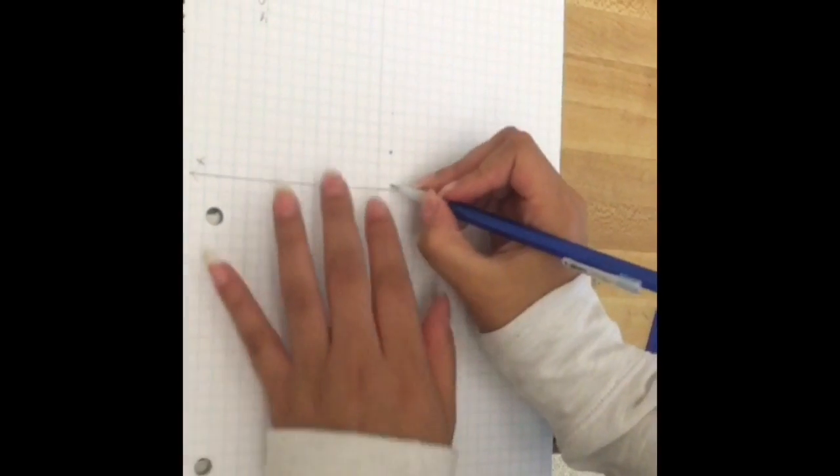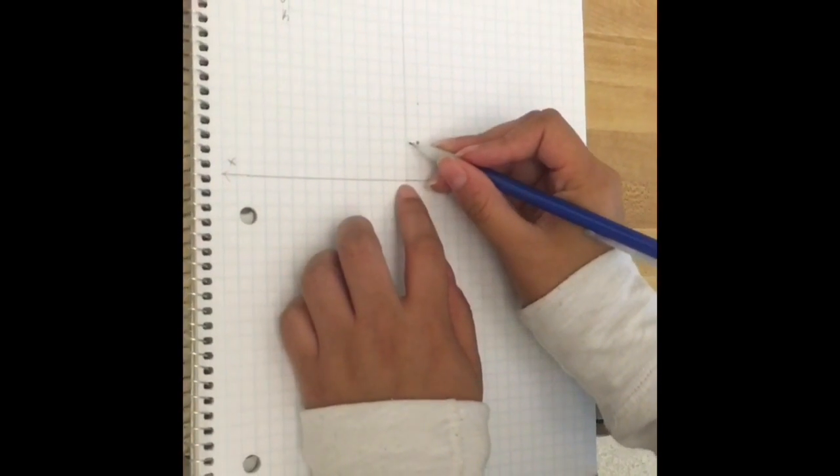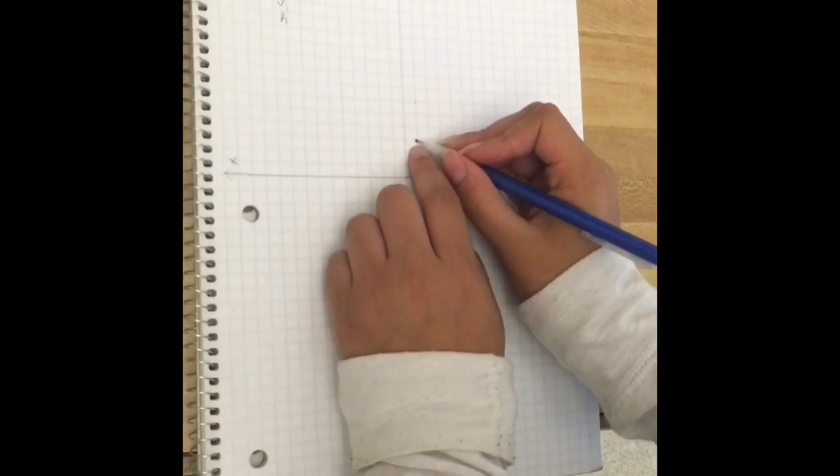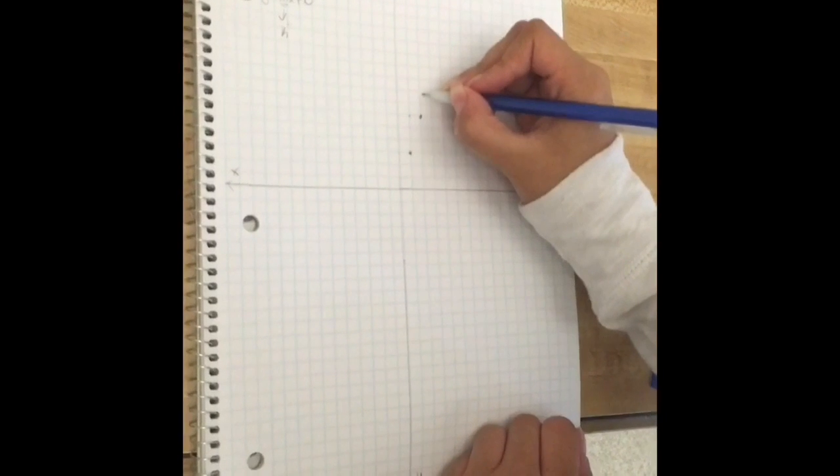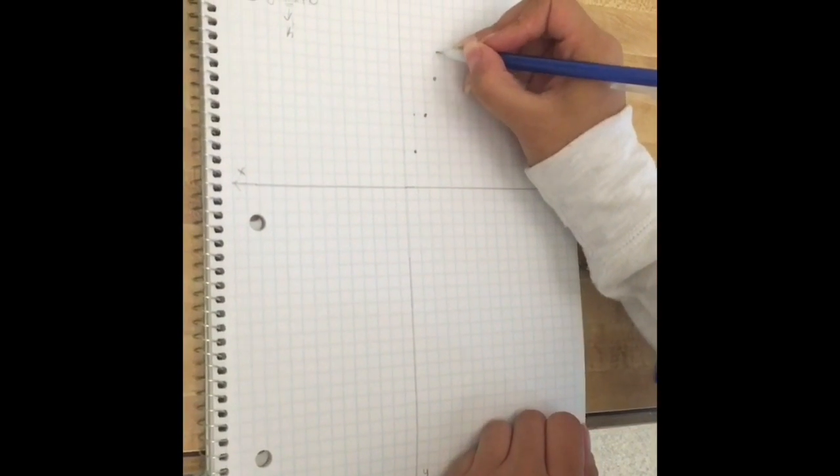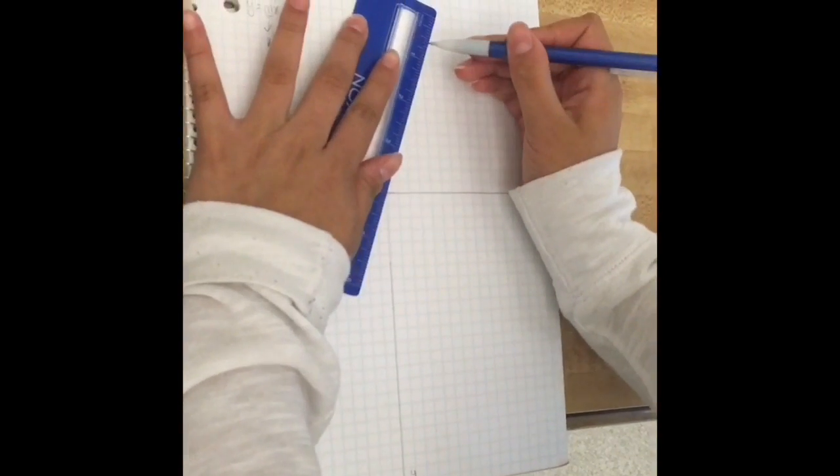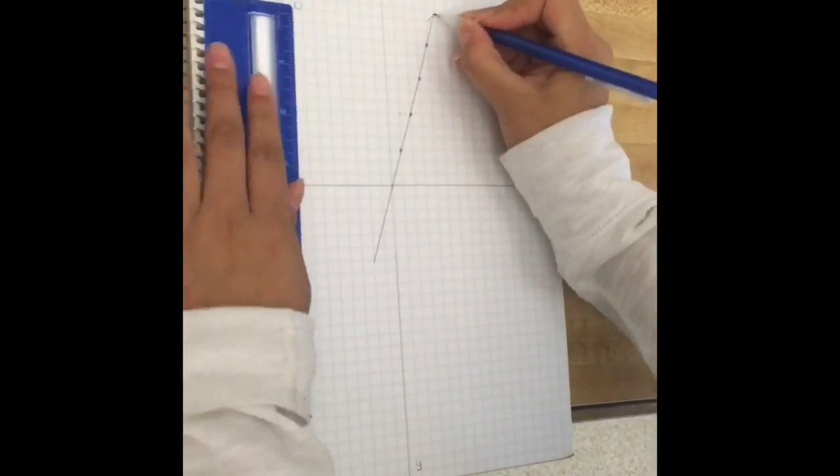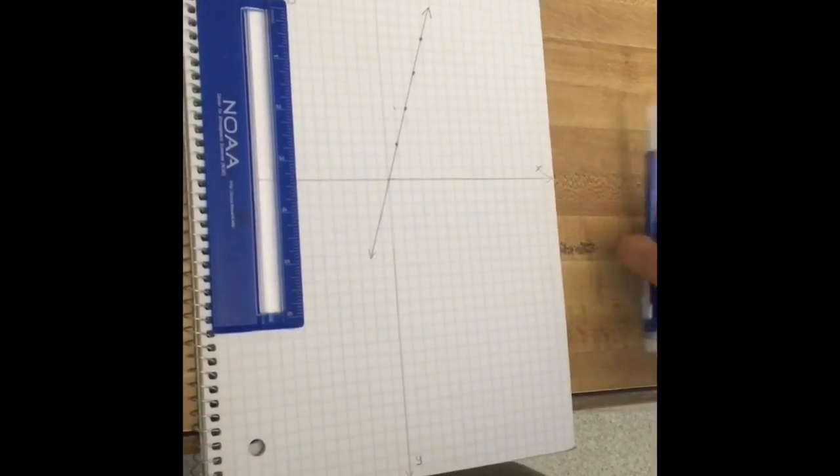So we start from the origin, and then we move 3 units up. 1, 2, 3. And then since it has a run of the number 1, we go over 1 unit. So then we keep on repeating the same process. 1, 2, 3, over 1. And that's how you graph a direct variation.